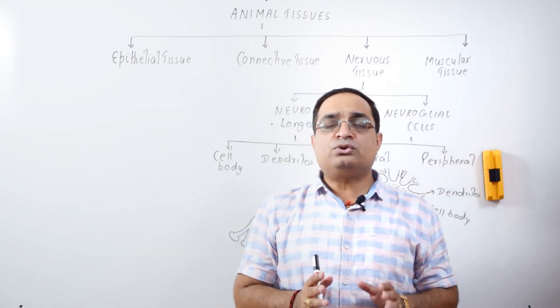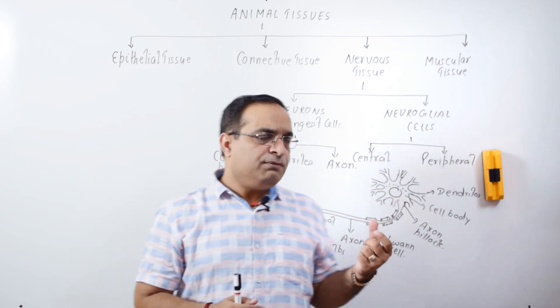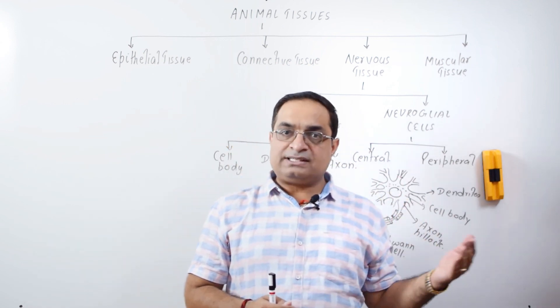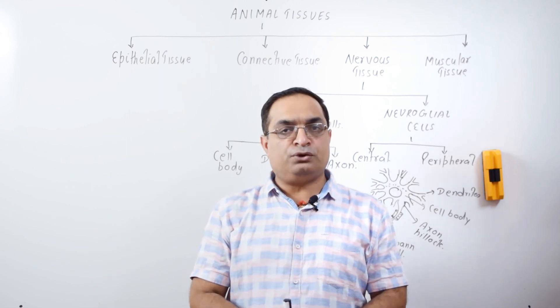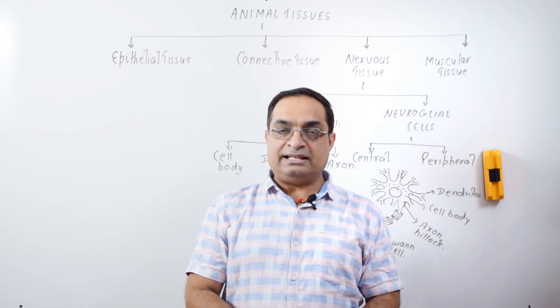So, that was a brief introduction to the four tissue types and we discussed briefly about the structure of neuron. In the next part of this lecture, we will discuss the structure of neuron in detail and we will discuss about different types of neuroglial cells.